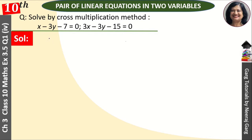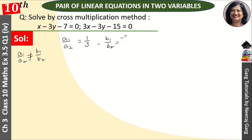What is a unique solution? For the unique solution, A1 upon A2 is not equal to B1 upon B2. First of all, we have to check this before cross multiplication. A1 upon A2 is not equal to 1, so we will use cross multiplication.